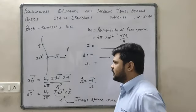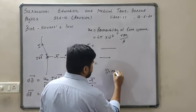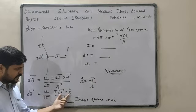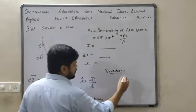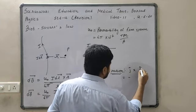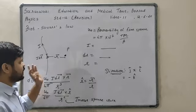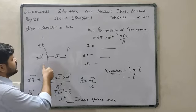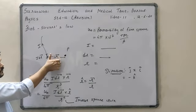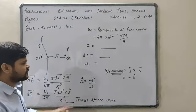With the help of Biot-Savart law we can find out the magnetic field. Now we will see some important points. First, we will find out the direction of the magnetic field at point P. This is given by IDL cross R. If IDL is in the y direction and R is in the x direction, then it will be j cross i, which gives minus k cap. So at point P, the magnetic field is in the negative z-axis direction. Alternatively, set your thumb in the direction of current; the direction of the curled fingers gives the direction of the magnetic field.